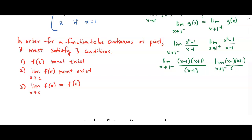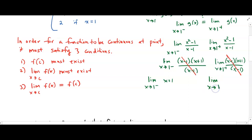We can cancel out the x minus 1. We end up with the limit as x approaches 1 from the left of x plus 1, and on the right side, the limit as x approaches 1 from the right of x plus 1. We do plug and chug — plug in 1 and you get 2. That is the same as 2. So the limit does exist. For part 2, check.